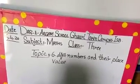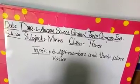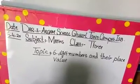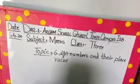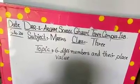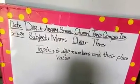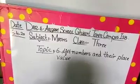Bismillahirrahmanirrahim. Assalamualaikum. Today we are going to start our math lesson of class 3 and the topic is 6-digit numbers and their place value. Students, now open your countdown book to page number 26. On your book page number 26, there is a topic: 6-digit numbers and their place value.